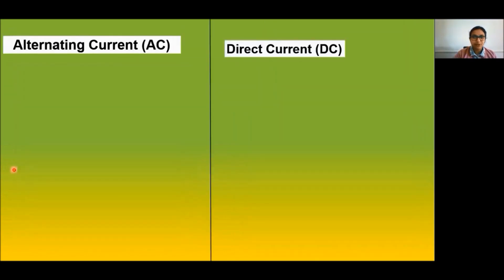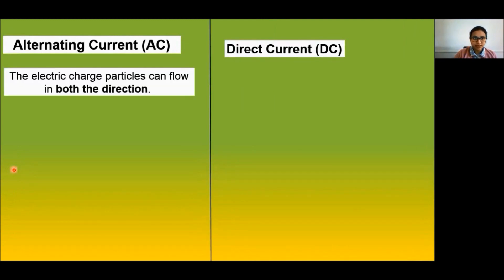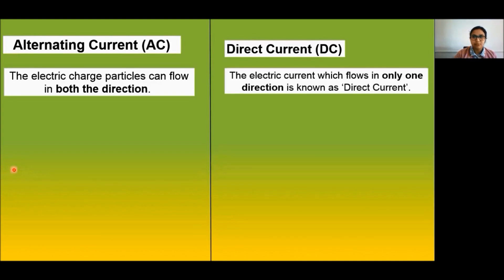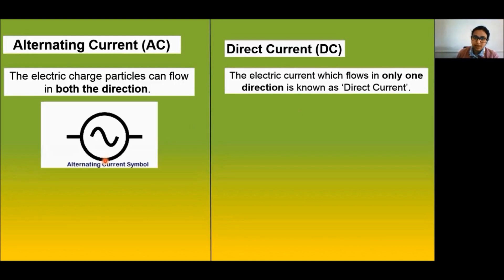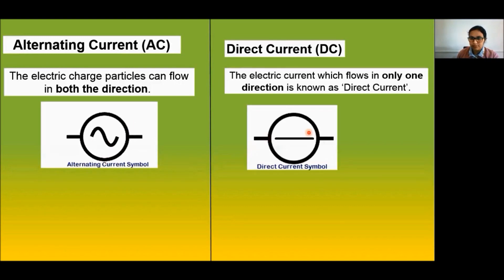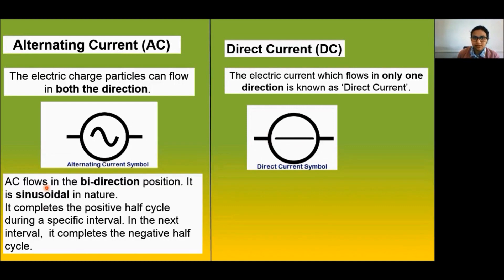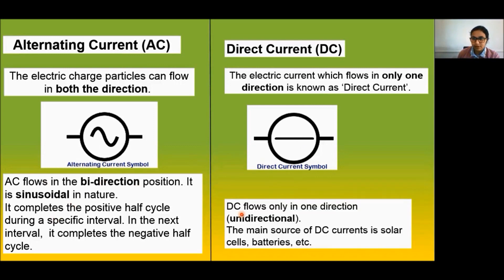What is the difference between alternating current and direct current? In direct current, the electric current flows only in one particular direction. Alternating current flows in a bidirectional manner and is sinusoidal in nature. The AC symbol and DC symbol are distinct representations of these two types of current.